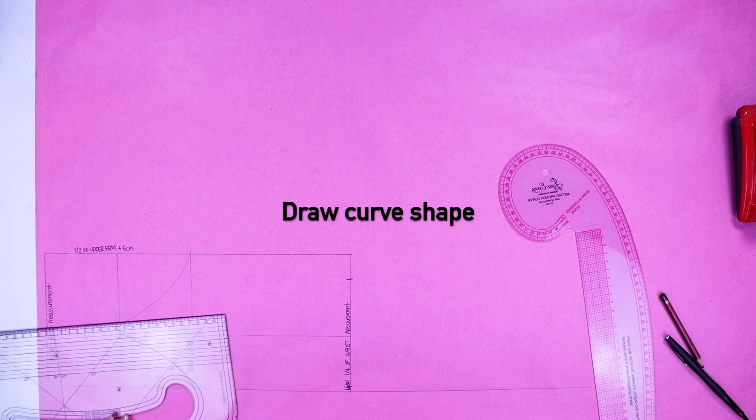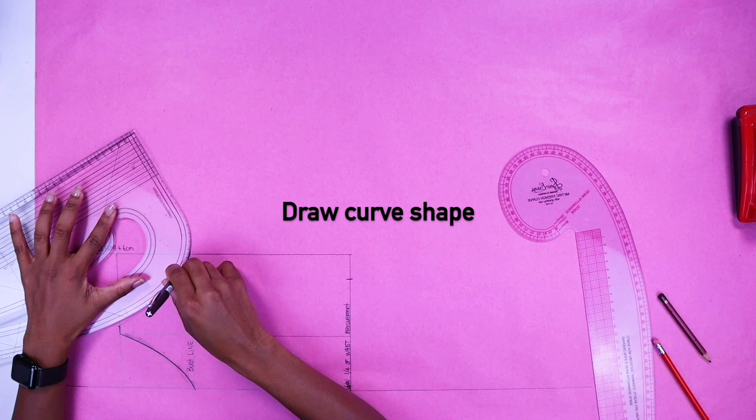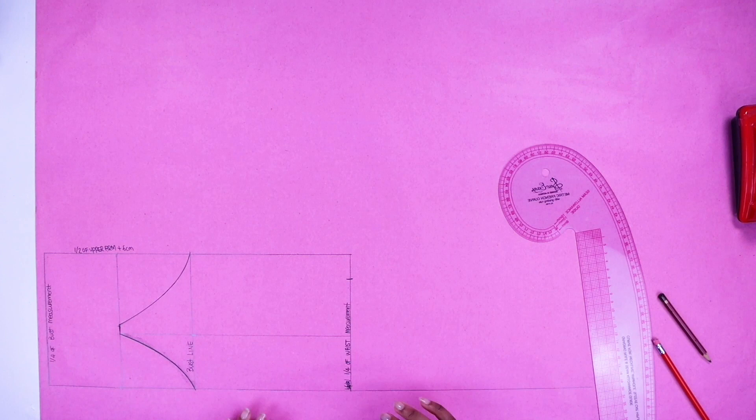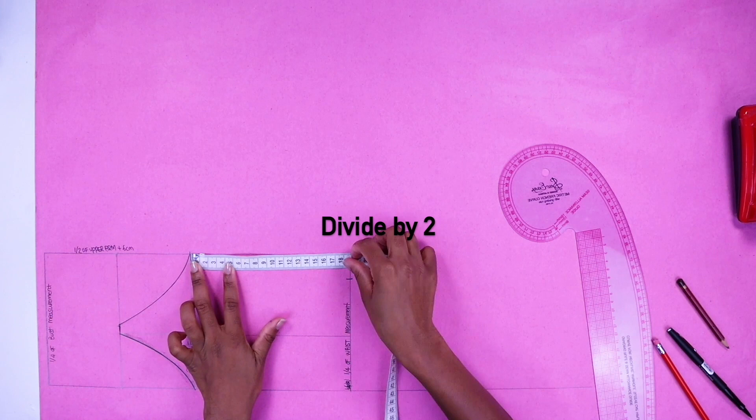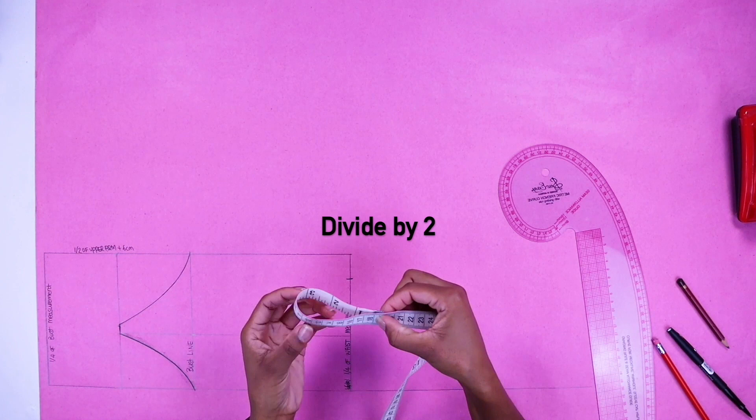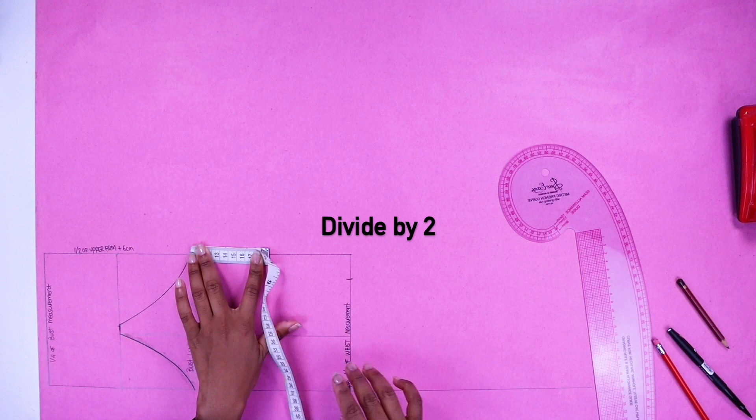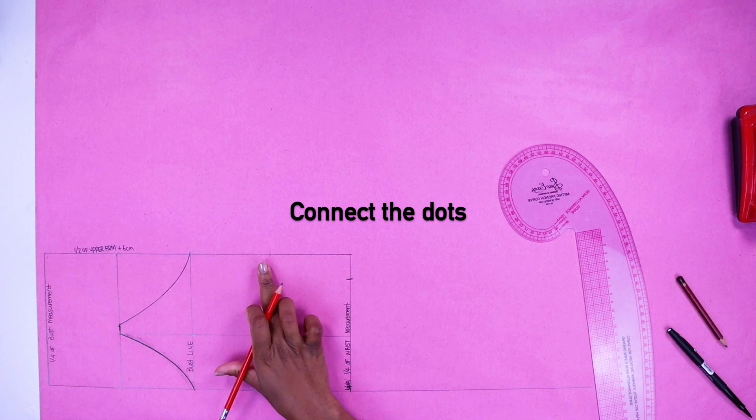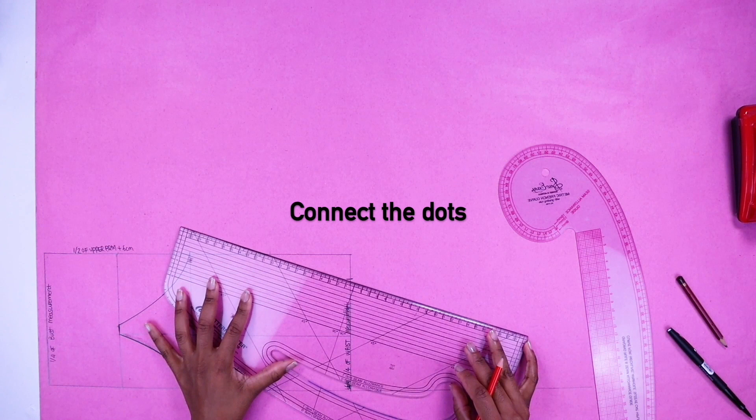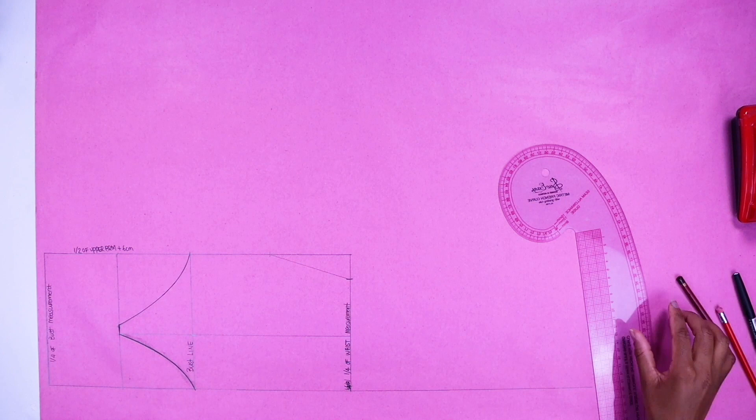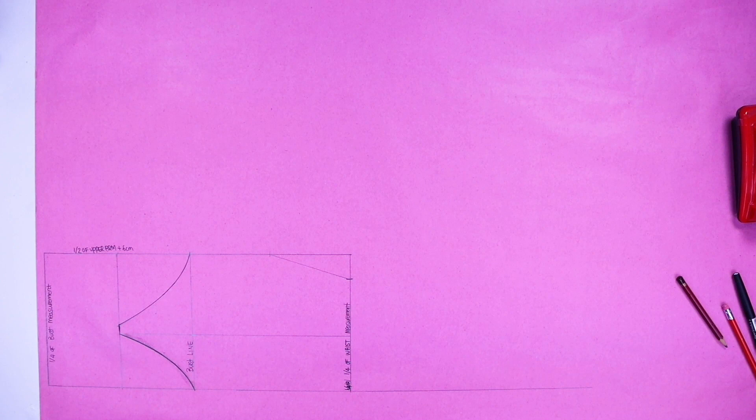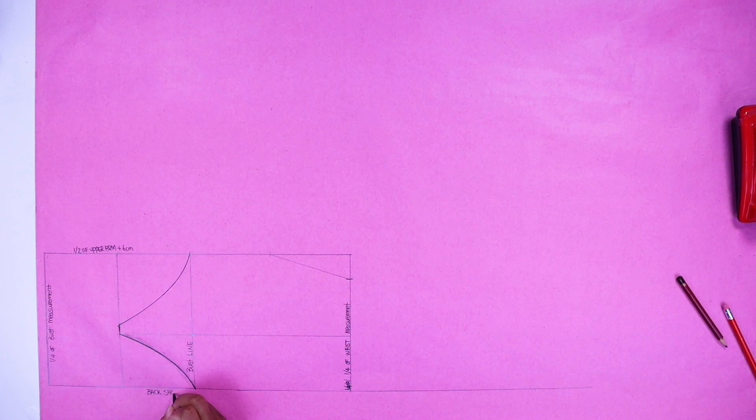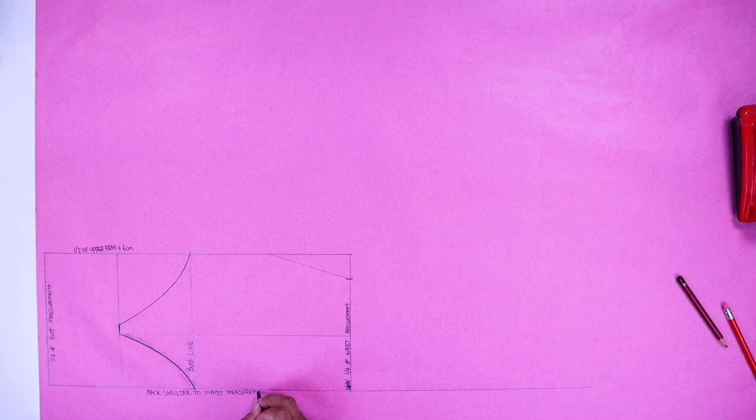And continue to do the same thing now. Next we're going to divide this line by two. Measure with your tape, fold in half again and you get your measurement. Now connect the dots. I'm going to write it down so that you designers know what this line is for. So this was for our back shoulder to waist measurement.